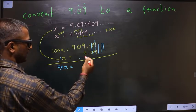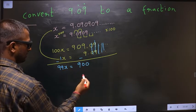Now 9 minus 9 is 0, 0, 9. So this gives us 900.